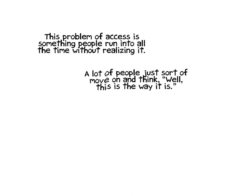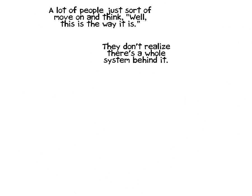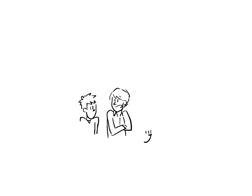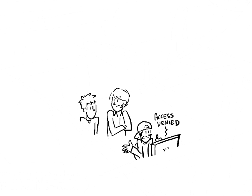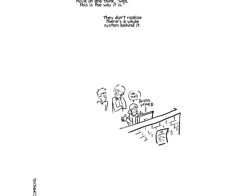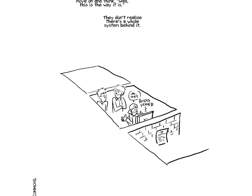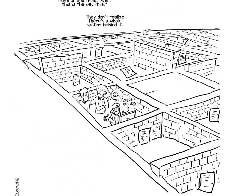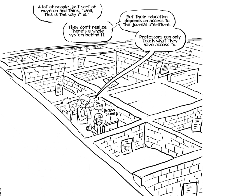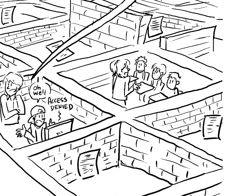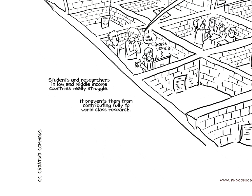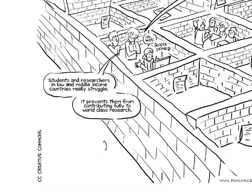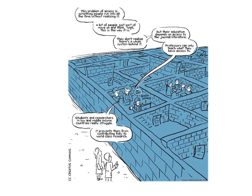This problem of access to research is one that people run into all the time, but it's not one they realize. When I was a student, whenever I would come across a great abstract and not have access to it, I just moved on and thought, this is the way it is. I didn't realize there was a system behind this causing me not to have access. Students' educations literally depend on access to the journal literature. Professors can only teach what they have access to. If you look at less wealthy countries — low and middle income countries — they really struggle to get access, and that prevents researchers in those countries from being able to contribute fully or do world-class research.